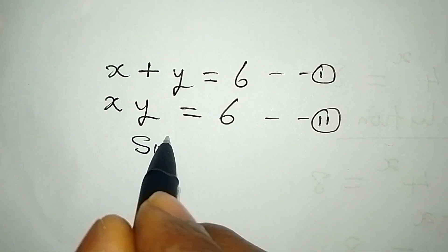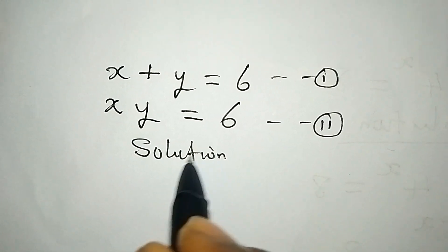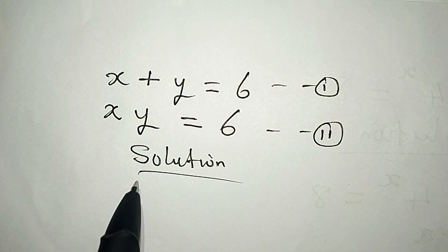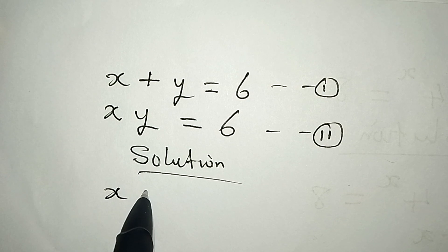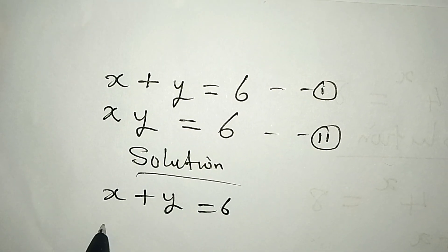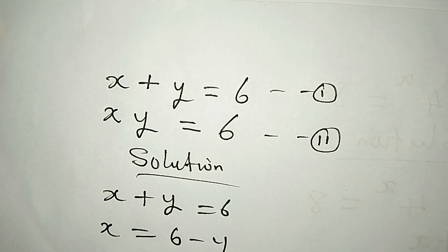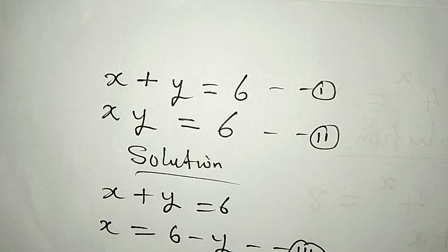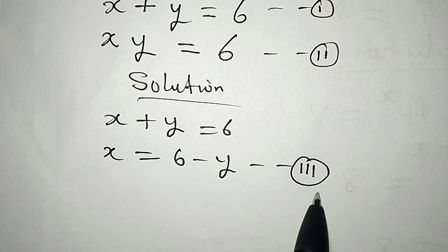Let's solve it and see how possible that will be. To deal with this, we can work on equation 1 and get x, so that x equals 6 minus y. We will call this equation 3 because we will be coming back to this.